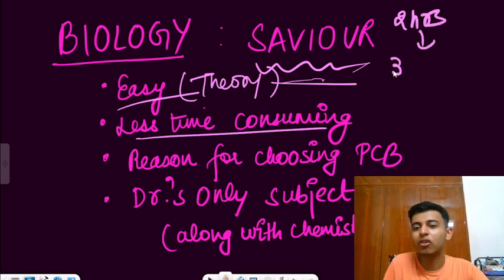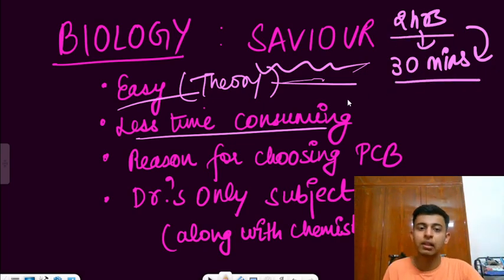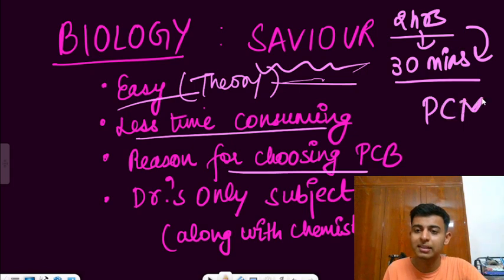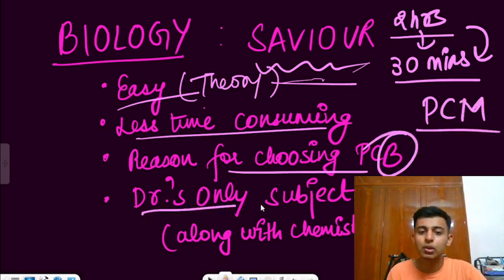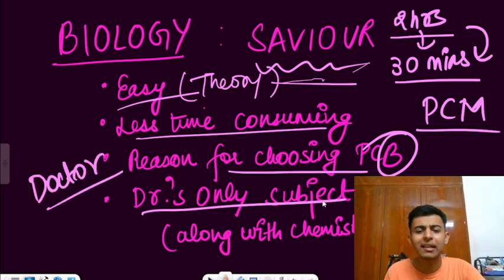It is very less time consuming. Like if one chapter of physics takes two hours, I feel one chapter of bio will take 30 minutes with that respect. So relatively, I'm thinking if a physics chapter takes two hours, bio will take 30 minutes, so four times less time. And bio is probably the reason for choosing PCB because if you were physics chemistry lover, you could have chosen PCM as well, but you chose PCB for this subject.